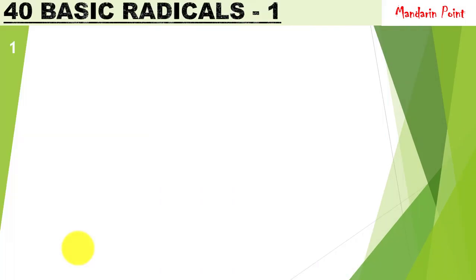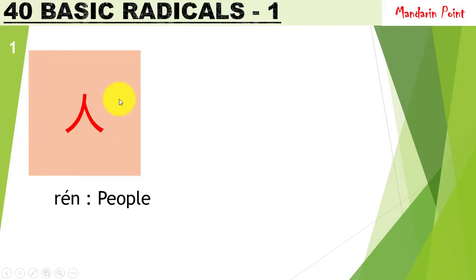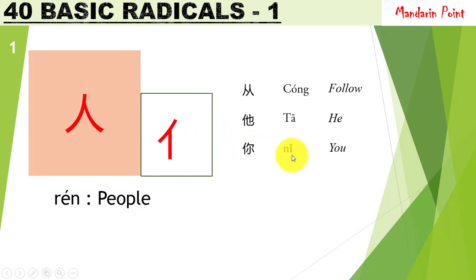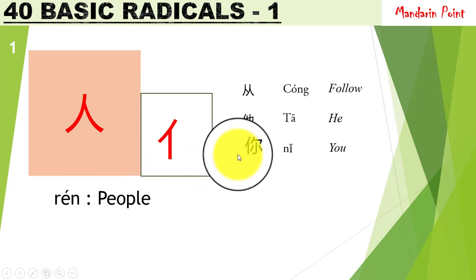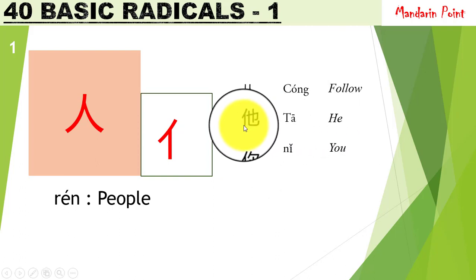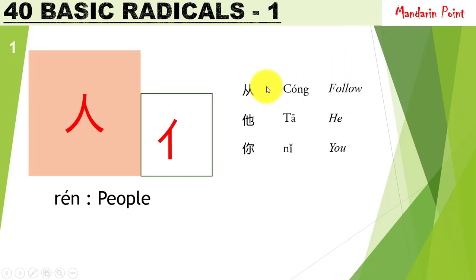Let's study the first Chinese radical. Here we have 人 rén, meaning 'people.' It also has a short form. So any character having this radical will portray the meaning of people or something related to people. For example, 你 nǐ meaning 'you' — you can see this radical on the left side. 他 tā meaning 'he' also has this radical on the left side. And 从 cóng meaning 'follow' — one person is behind the other, so the meaning is following.